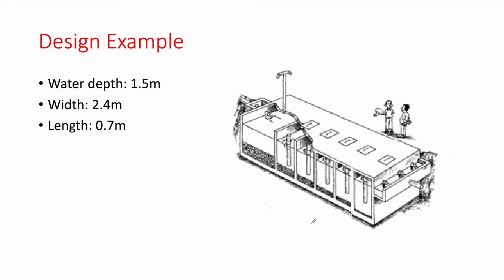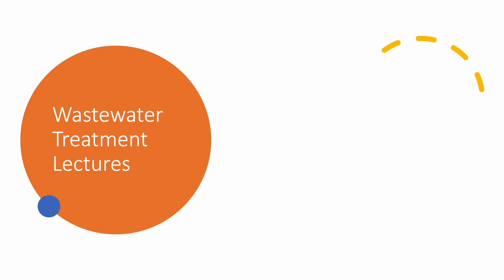A 3D representation of the ABR system shows the settler at the inlet, possibly preceded by a screen, followed by the ABR compartments with vent pipes to evacuate gases and manholes for maintenance access. After treatment in the ABR, the water flows into secondary treatment. For more information about wastewater treatment, check the related lectures, and please like and subscribe for support.